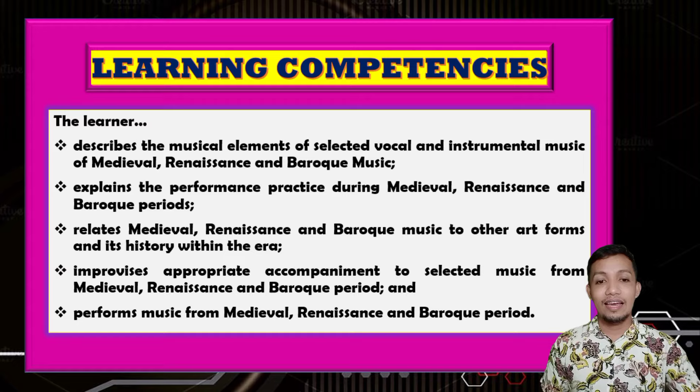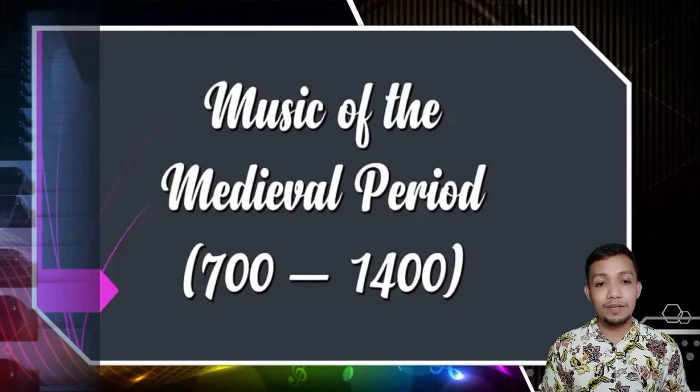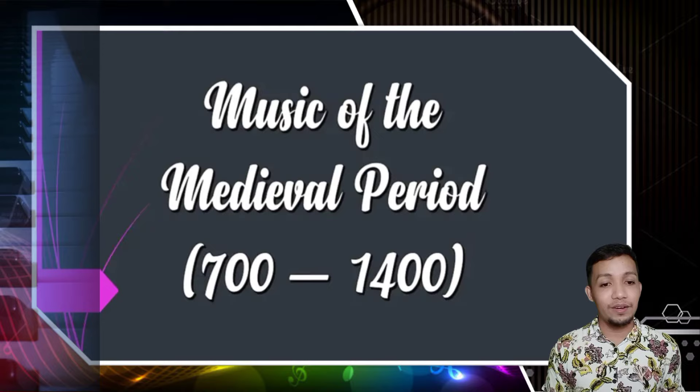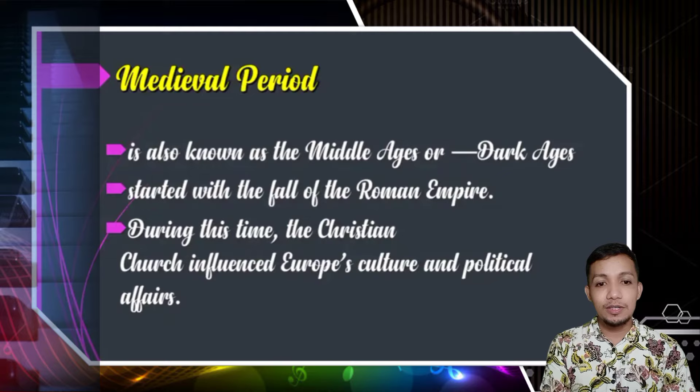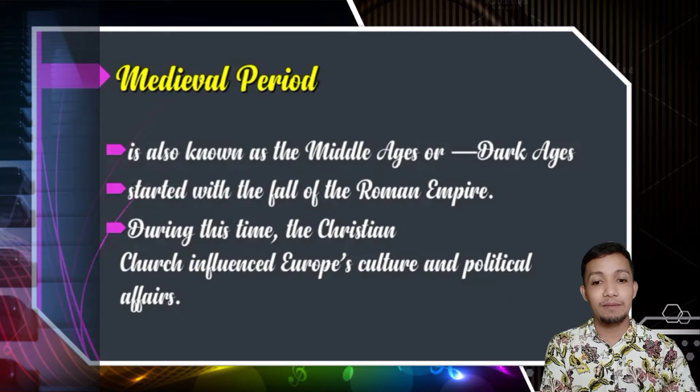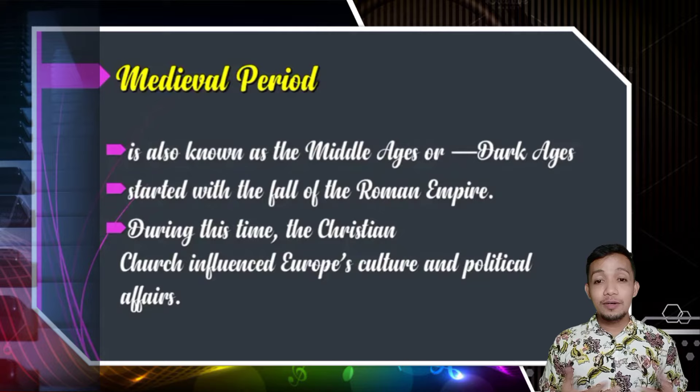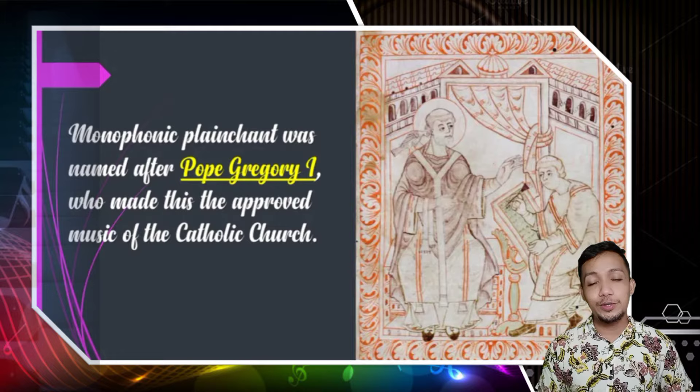Let us first discuss about music of the medieval period, which started in the years 700 to 1400. The medieval period is also known as the Middle Ages or Dark Ages. It started with the fall of the Roman Empire, and during this time, the Christian church influenced Europe's culture and political affairs. So the government before was actually held by religion. We call the earliest style of music as monophonic plain chant, which was actually popularized during the medieval period.